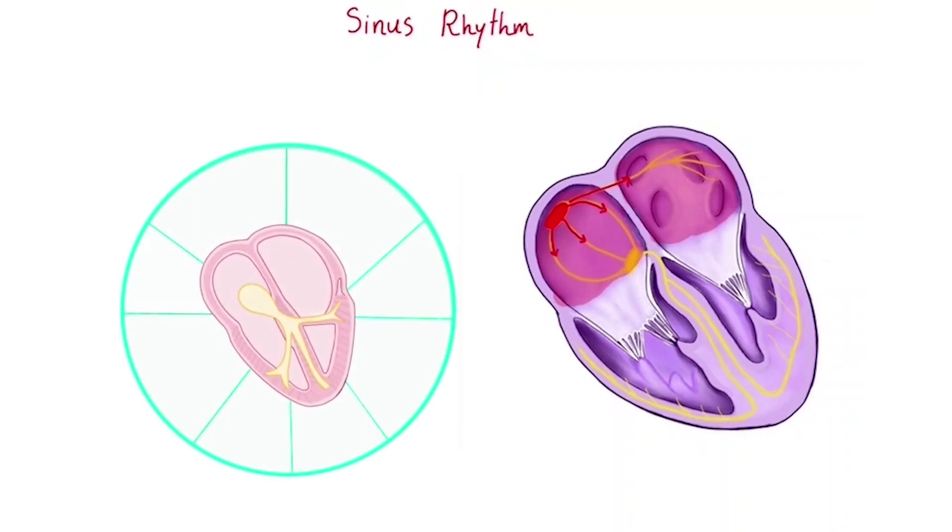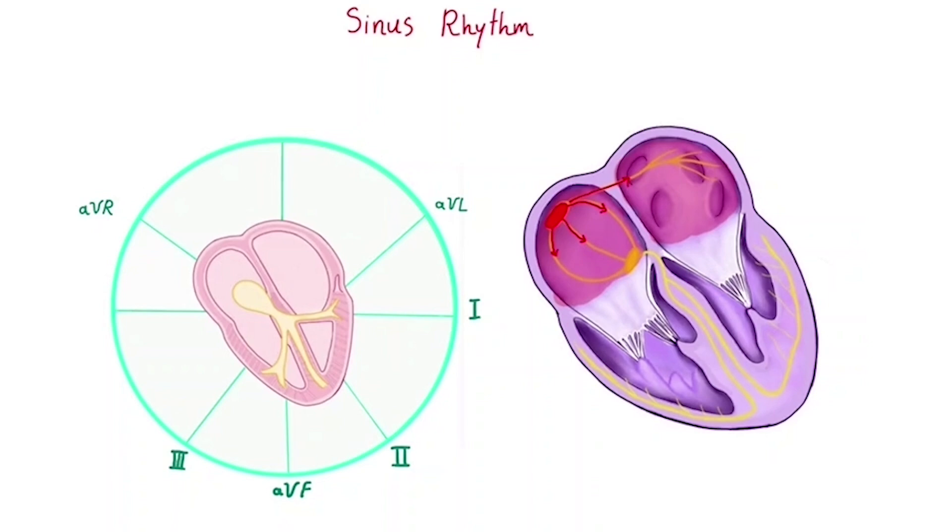Now here's the key point. If the net direction of the electrical impulse is aligned with the axis of a lead, that lead will record a positive deflection. If the impulse is moving opposite to the axis of a lead, it will appear as a negative deflection. Because of the normal orientation of the cardiac electrical axis, in leads I and II, the impulse travels toward the leads, so the P wave is upright.